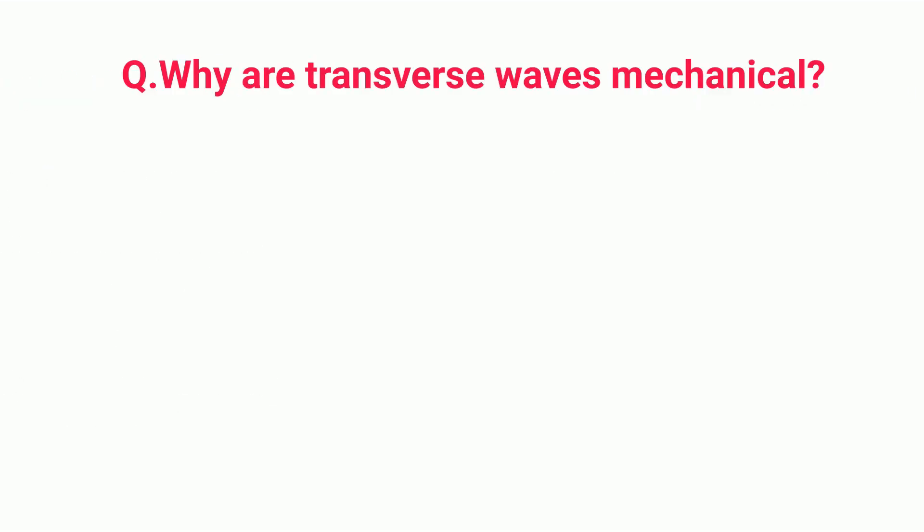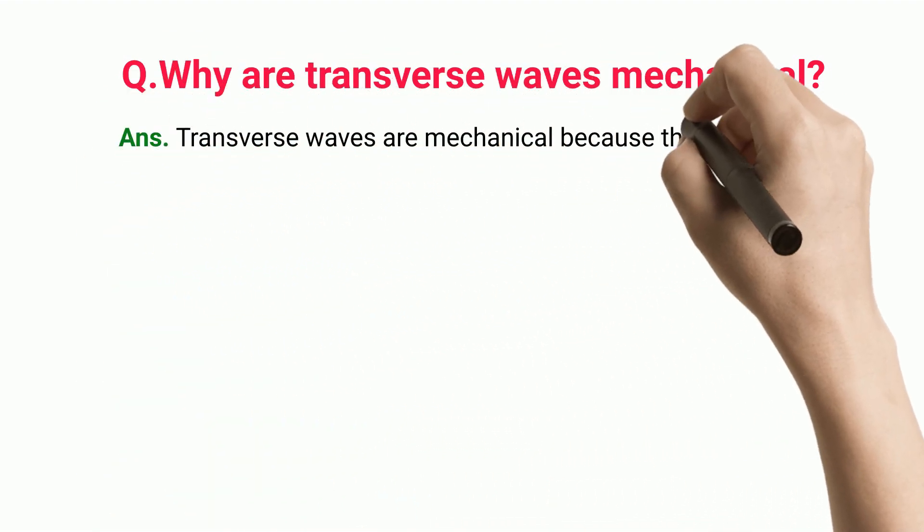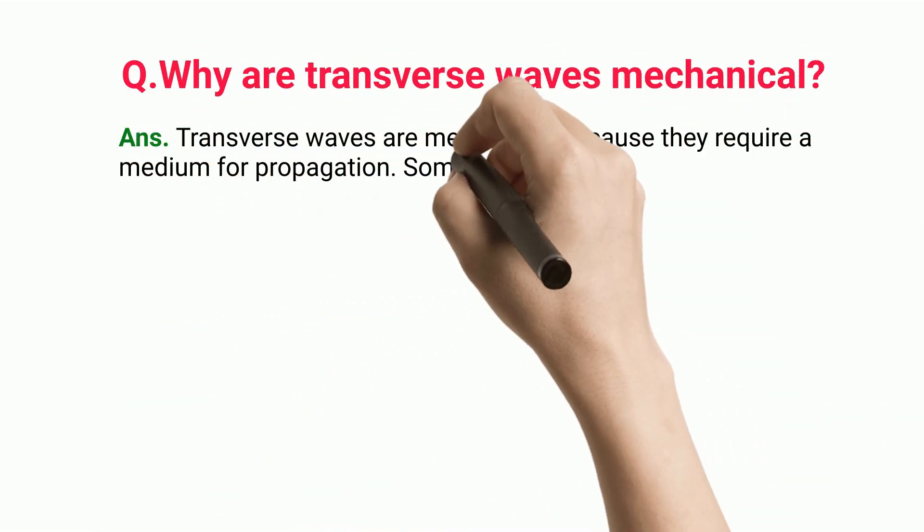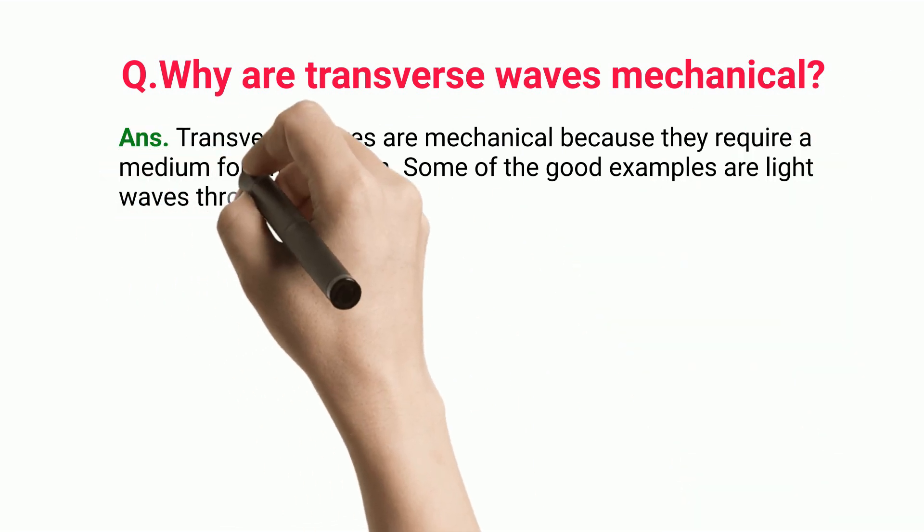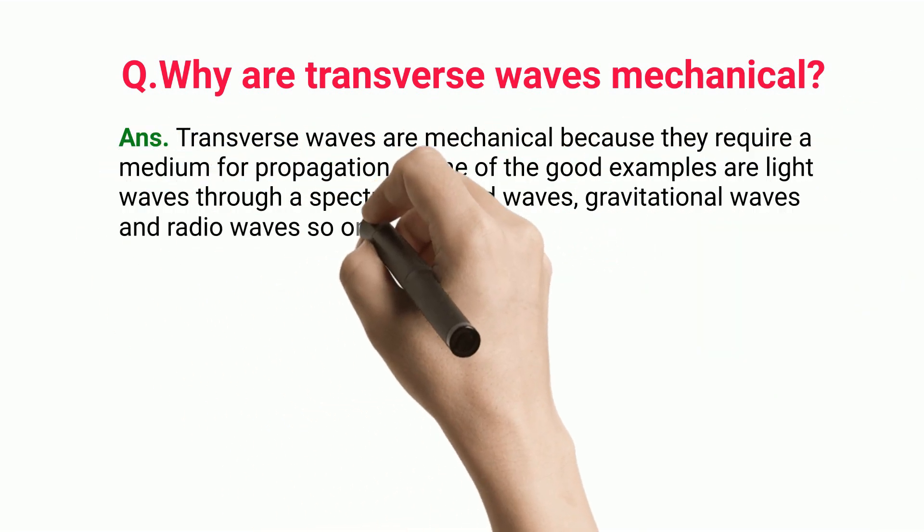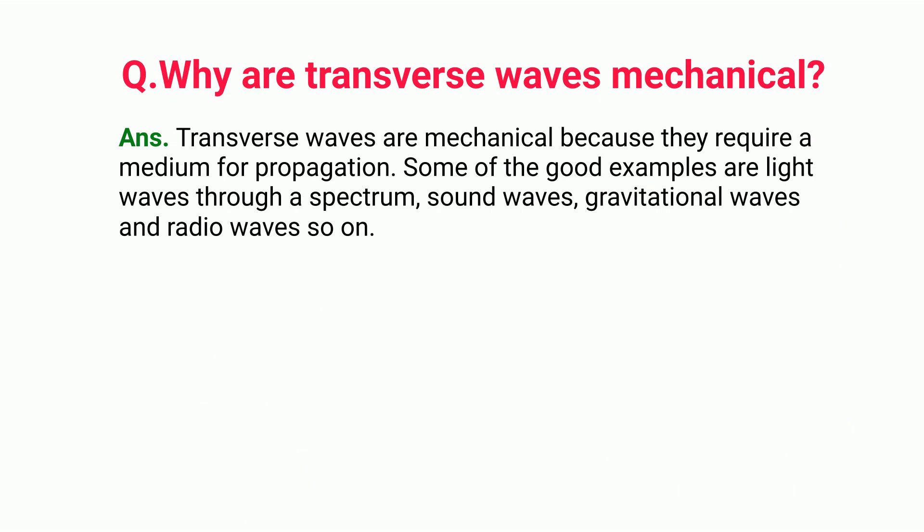Why are transverse waves mechanical? Transverse waves are mechanical because they require a medium for propagation. Some of the good examples are light waves through a spectrum, sound waves, gravitational waves, and radio waves.